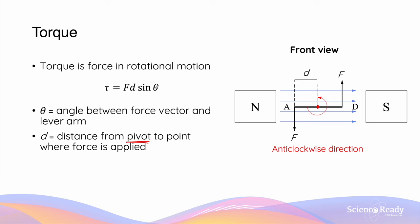The angle theta is the angle between the force vector and the lever arm. The lever arm here is the plane of the coil — so AD. When the coil is in the position shown, the angle theta is 90 degrees.